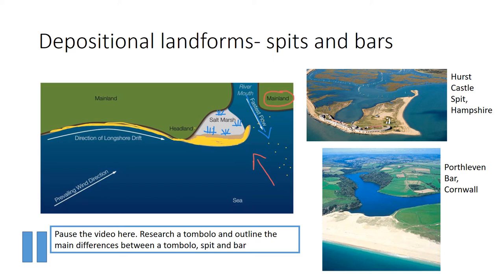Lastly, another feature which is quite an unusual one is called a tombolo. These can form when a beach grows out to meet an island just offshore. This is often produced when two longshore drift currents from different directions meet. If you pause the video here, research a photo of a tombolo and then outline the main differences between tombolo, spits and bars.